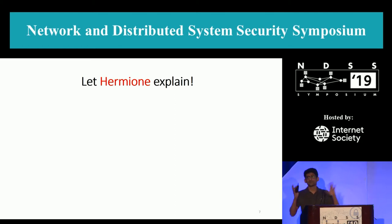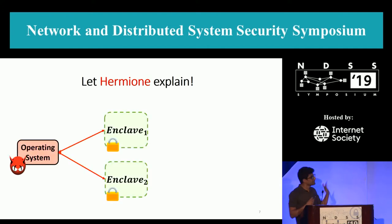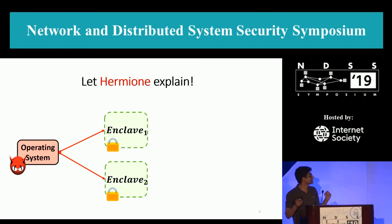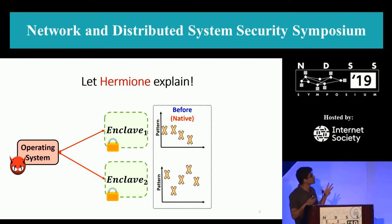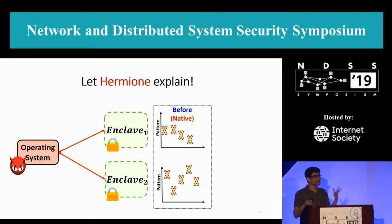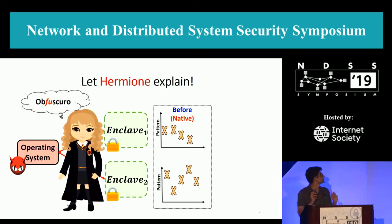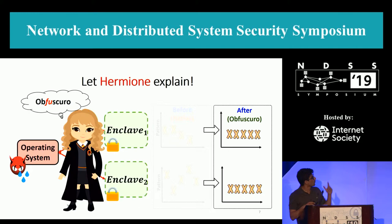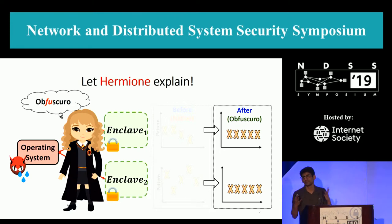Since I'm a big Harry Potter fan, let Hermione explain this concept. Consider an operating system running on a system with two different enclaves. Since these enclaves are different, the patterns they show are also slightly different, so the operating system can at least figure out that these are different programs. But Hermione comes up with a solution — we'll call it Opfus Kuro — after which both programs exhibit the exact same memory traces, and the operating system learns nothing because there is no information leaked from this design.